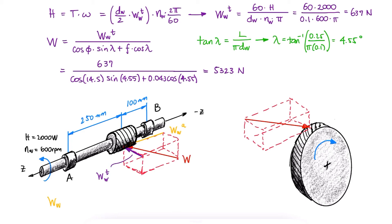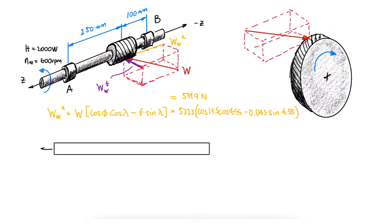And since we now know the direction of the axial component of that force, we can do a simple statically indeterminate analysis to find the axial reaction forces at bearings A and B.